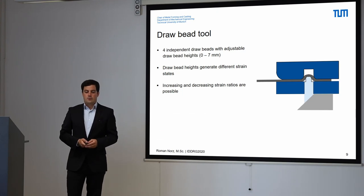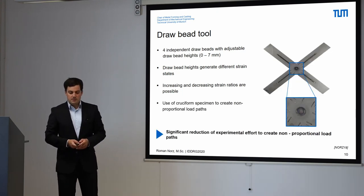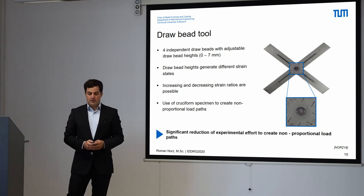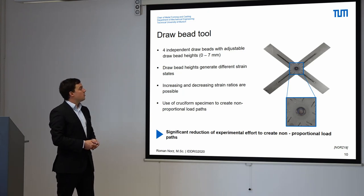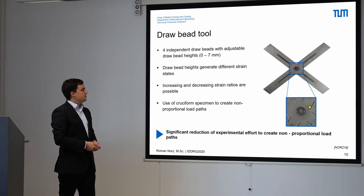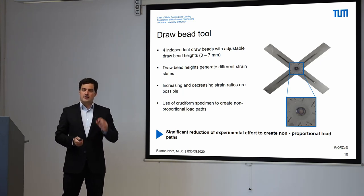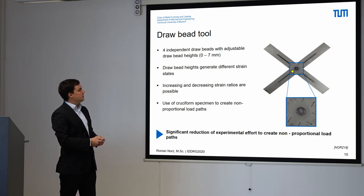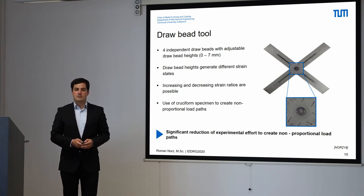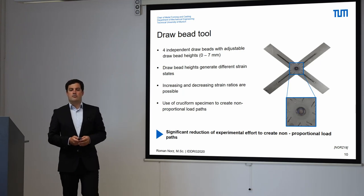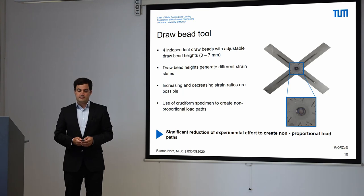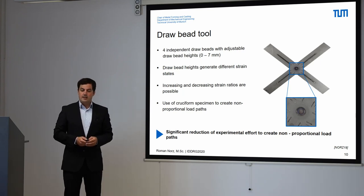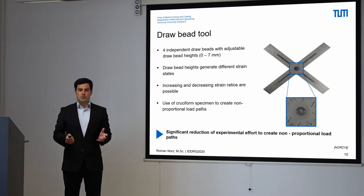To use this tool, we have created a cruciform specimen, which I presented at the last IDDRG in Twente. It consists of three single layers of metal which are welded together. The top and bottom sheet metal have a hole in the center, leading to a reduction in thickness in the center of the specimen with a ratio of three millimeters thickness in the arms and one millimeter in the center. This thickness reduction ensures that the crack and the failure after the strain path occurs in the center of the specimen. With this setup, the draw bead tool in combination with the cruciform specimen leads to a significant reduction in experimental effort to create non-proportional load paths.